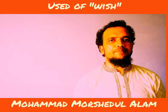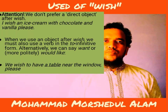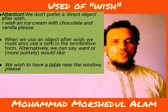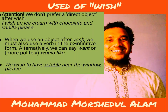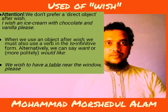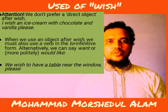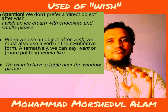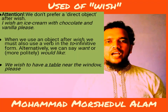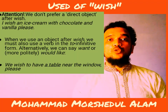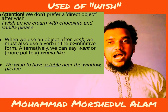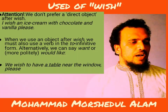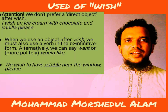Note: we don't prefer a direct object directly after 'wish.' That means you don't place the thing you want immediately after 'wish' — you have to use 'to have.' For example: 'I wish a table here' is incorrect; the correct form is 'I wish to have a table here.'